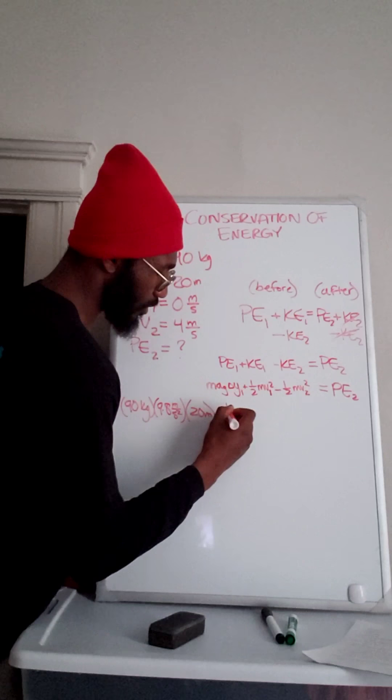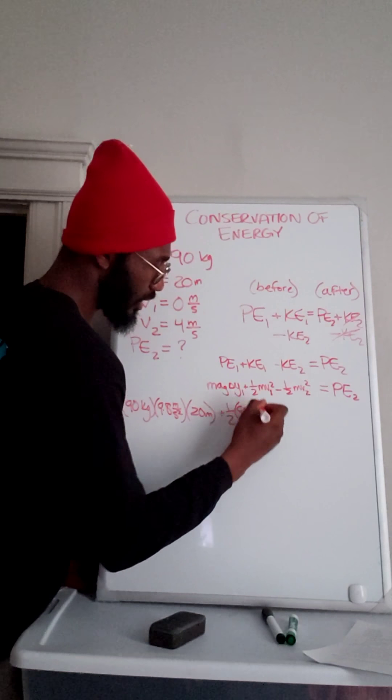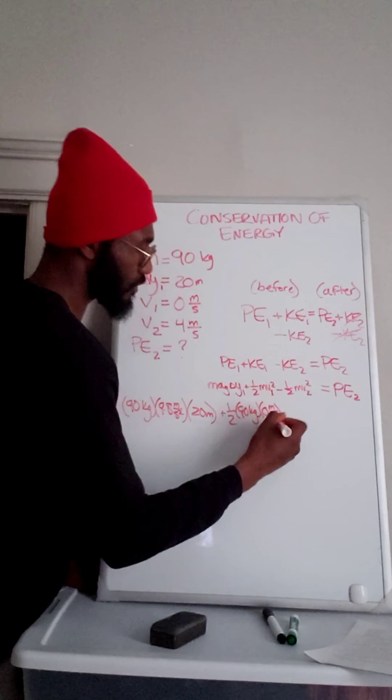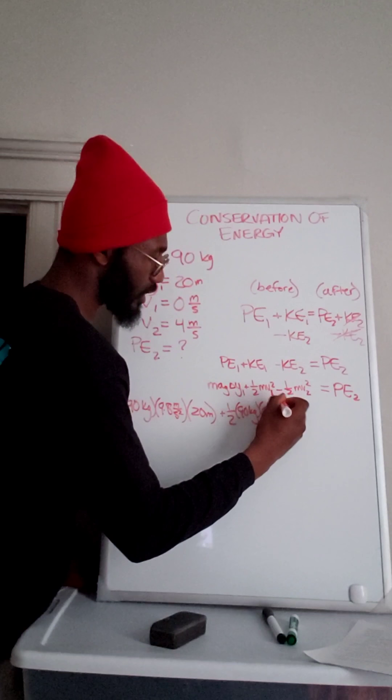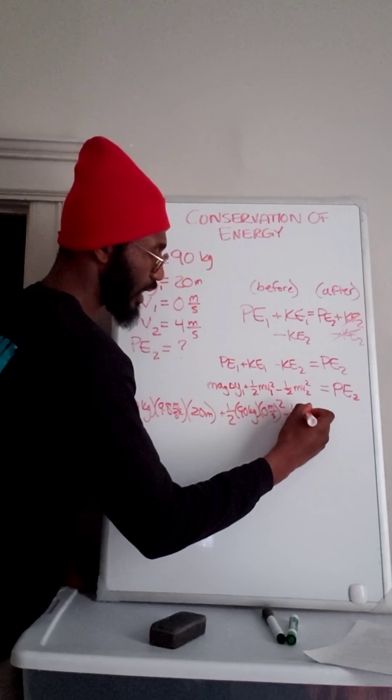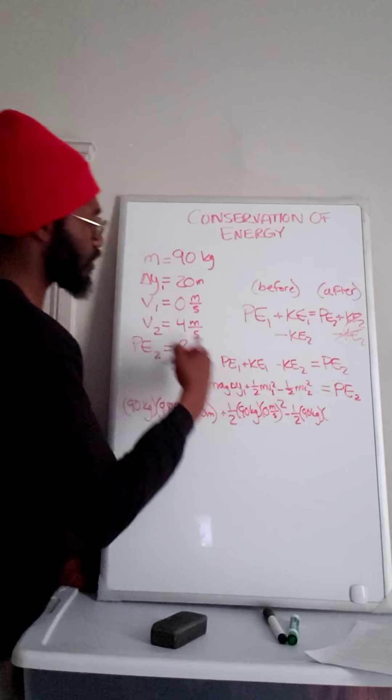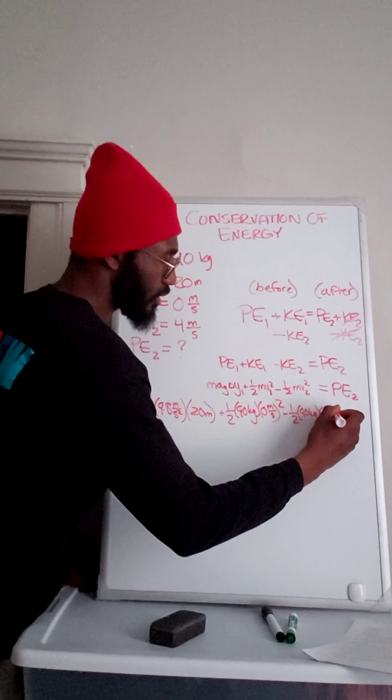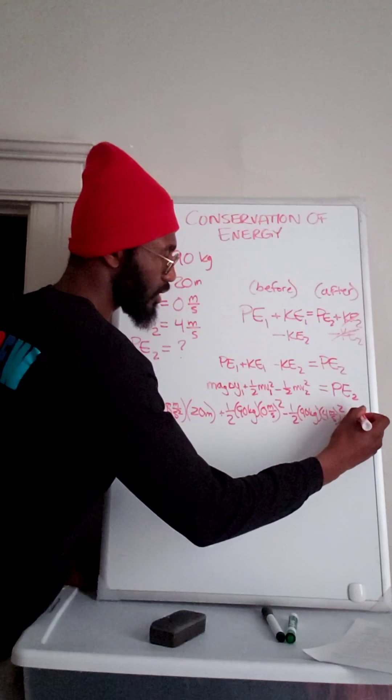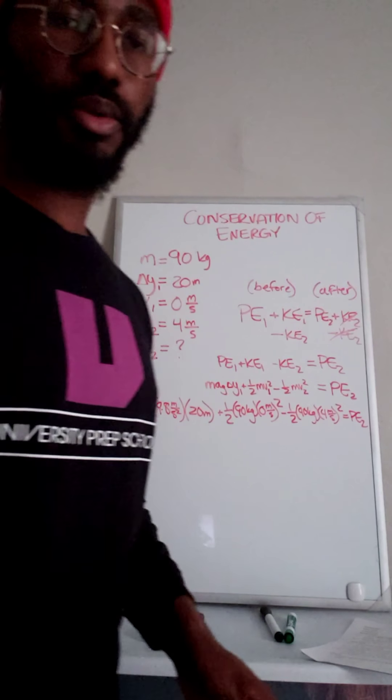We're going to add that 1 half M, which is 90 kilograms. And V1 is 0 meters per second from up here. And we're going to square that. And then we also have 1 half 90 kilograms times V2, which is 4 meters per second. We're going to square that. And that equals potential energy 2.